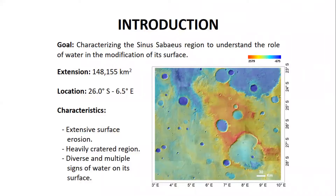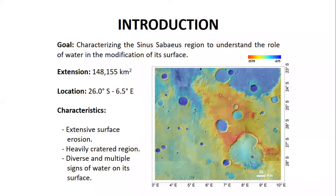Our goal is characterizing the Sinus Sabaeus region to understand the role of water in the modification of its surface. We map a square-shaped area located in the southern equatorial region of Mars in the highlands at the southwest of Schiaparelli Crater. This study area sits in a heavily cratered region, subjected to extensive surface erosion, but still shows diverse signs of water on its surface.